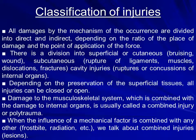Classification of injuries: all damages by the mechanism of occurrence are divided into direct and indirect, depending on the ratio of the place of damage and the point of application of force. There is also a division into superficial or cutaneous bruising and wound, subcutaneous rupture of ligament, muscles, dislocation, fracture, cavity injuries, and ruptures or concussion of internal organs.